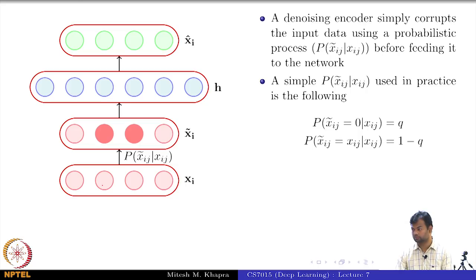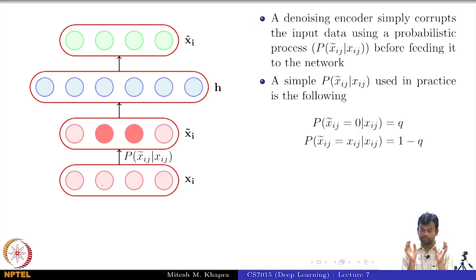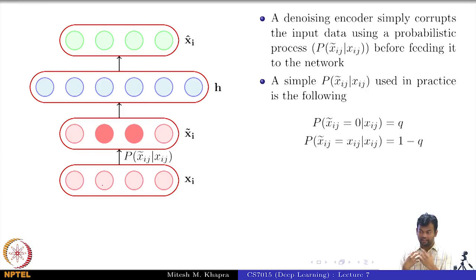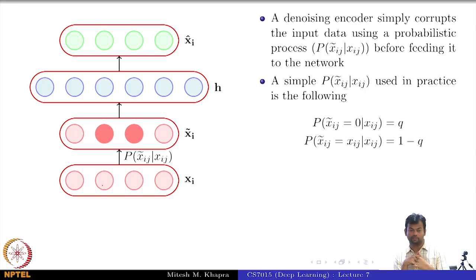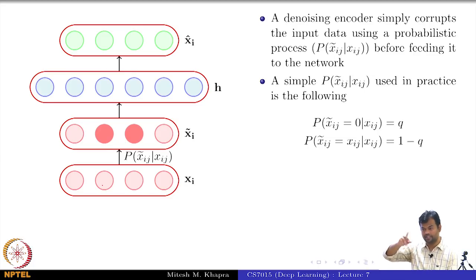Why would this work? In the binary input case, our earlier problem was that I was completely able to reconstruct the training data, but at test time I had issues. Now I have corrupted the training data. You could also flip zeros to ones — that is also valid. That is the kind of question I was expecting.